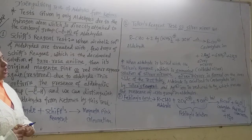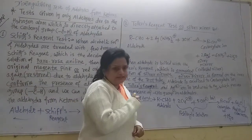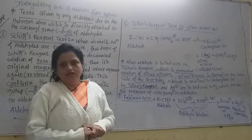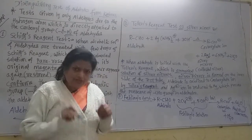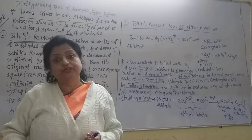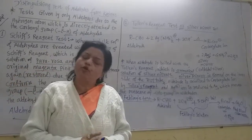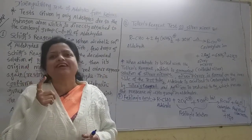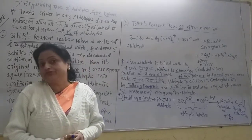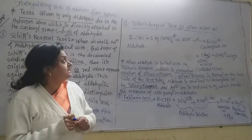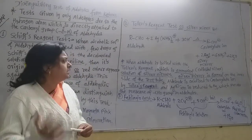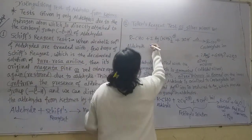The second test is the Tollens' reagent test, also called the silver mirror test, because in this test colloidal silver is deposited on the inner wall of the test tube. If there is a silver mirror on the inner side of the test tube, then definitely the given substance is the aldehyde. Tollens' reagent is the ammoniacal solution of silver nitrate; the nitrate group is not shown in the formula because only the ions are required.